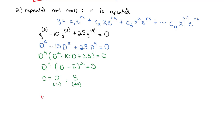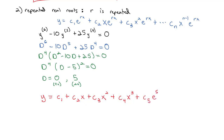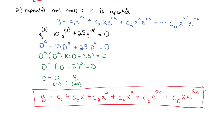When we write out our solution to this homogeneous linear differential equation with constant coefficients, we start with c1·e^0 (which is 1), and since 0 is repeated 4 times, we get c2·x, c3·x², and c4·x³ — giving us four linearly independent solutions for the d = 0 case. For d = 5, we get c5·e^(5x), and since it's repeated, a second linearly independent solution c6·x·e^(5x). We create linearly independent solutions by multiplying by x, x², x³, and so on until we've accounted for all repeated roots.